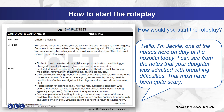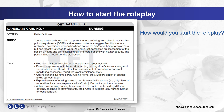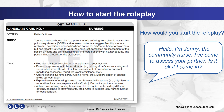Here is an example of what you could say: 'Hello, I'm Jackie, one of the nurses here on duty at the hospital today. I can see from my notes that your daughter was admitted with breathing difficulties. That must have been quite scary.' The empathetic phrase here acknowledges that this must have been a frightening experience for the mother. Let's look at one more. How would you start this role play? You could say: 'Hello, I'm Jenny, the community nurse. I've come to assess your partner. Is it OK if I come in?' It is a home visit, so the nurse asks permission to enter the home.